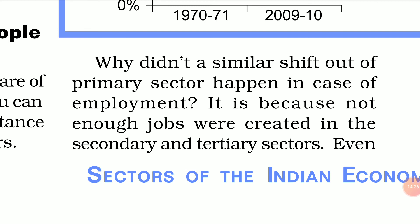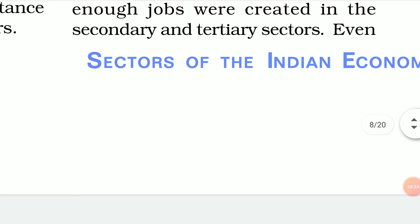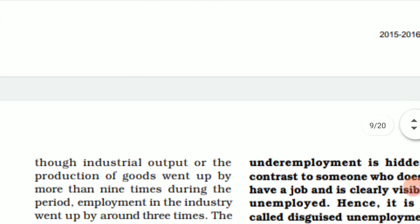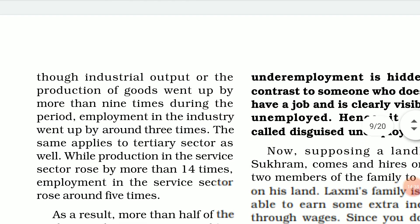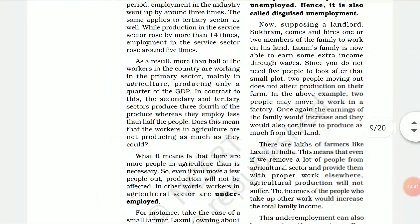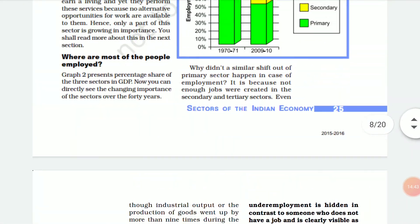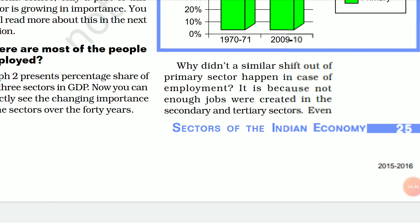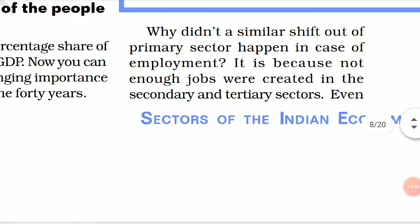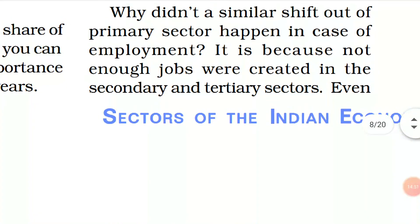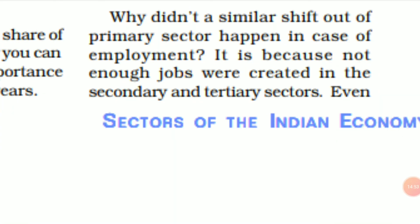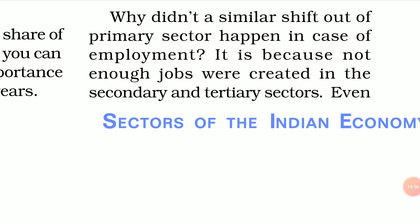Why didn't a similar shift out of the primary sector happen in the case of employment? It is because not enough jobs were created in the secondary and tertiary sectors. India has always been an agricultural country, so people — even if they do not have any skill, do not know pottery or carpentry, and are not educated — can still involve themselves in agriculture. Many people in India also have their own land to work on. Secondary and tertiary sectors could not generate enough employment, so people had no alternative and continued in the same profession.